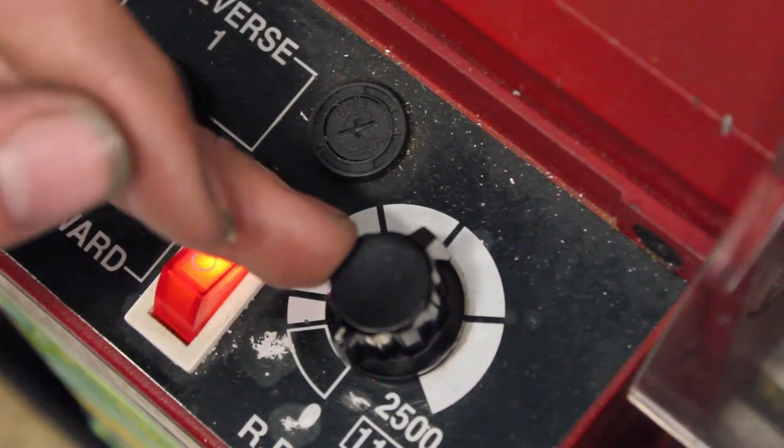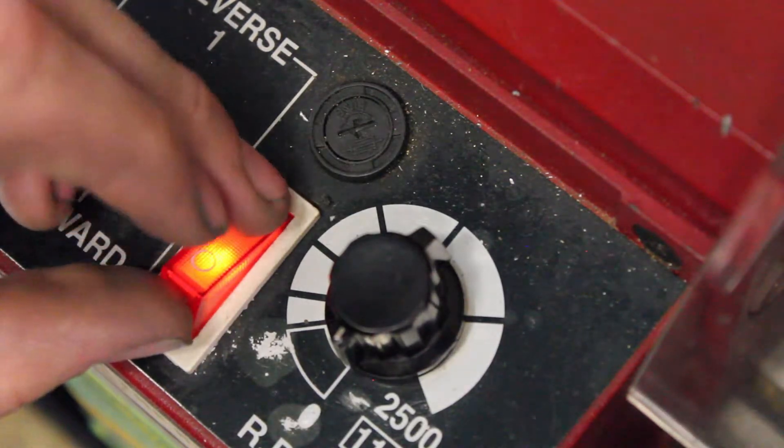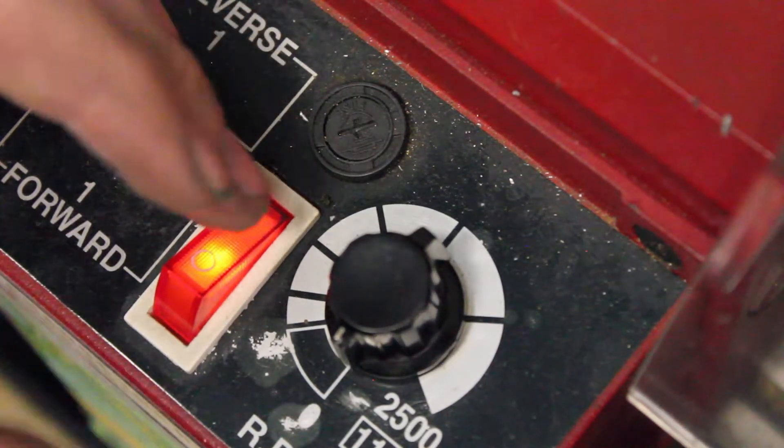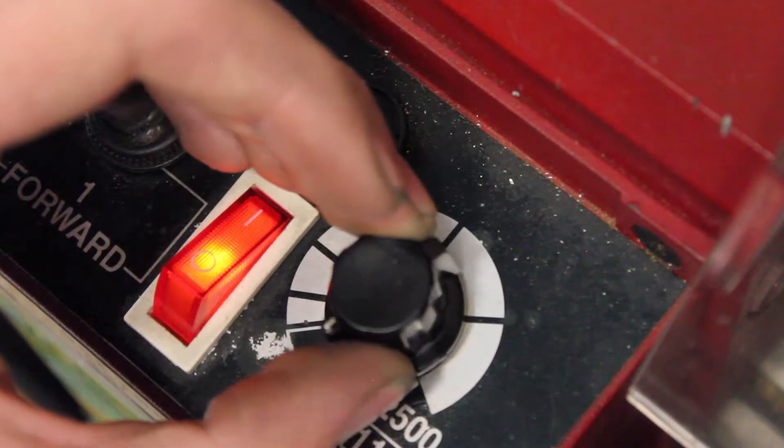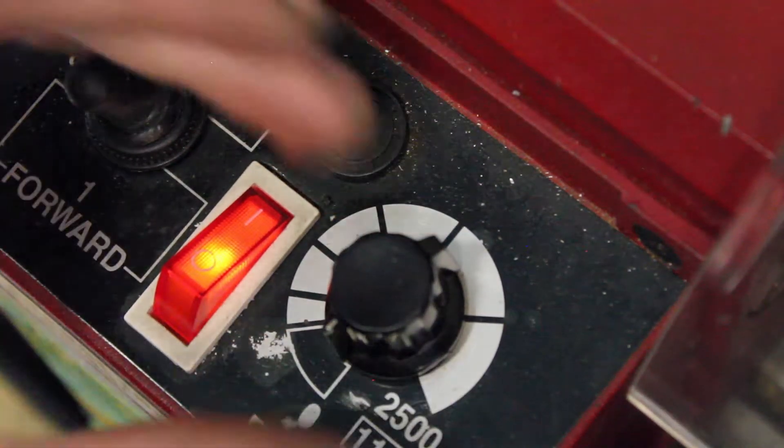The speed that you'll need to run your part on depends on the size and material of your part. Brass is pretty forgiving, so with this part I'm just going to use a slower speed and it won't make much of a difference.